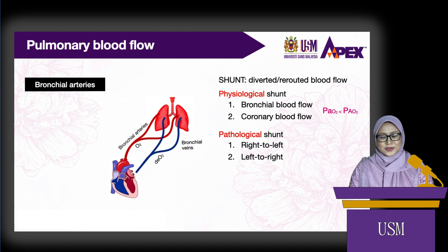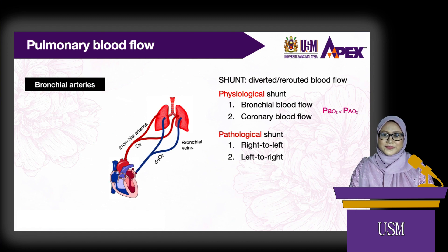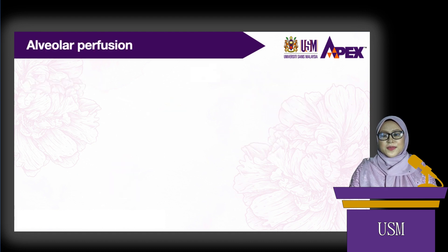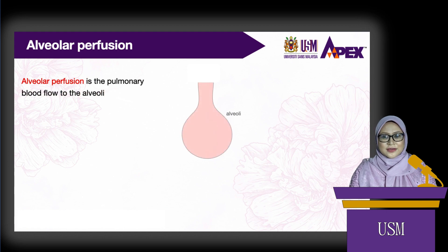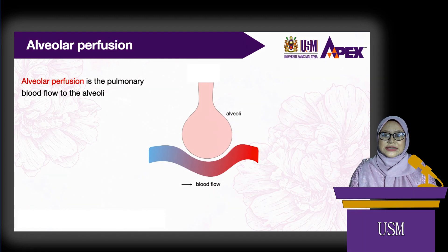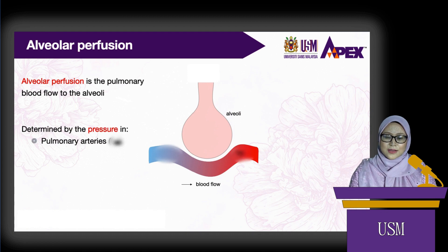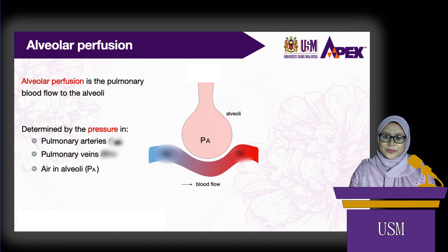So to sum up, the lungs receive two blood supplies from the pulmonary arteries and bronchial arteries. Alveolar perfusion or pulmonary perfusion refers to the pulmonary blood supplying the alveoli and is involved in gas exchange. Alveolar perfusion is determined by the pressure in pulmonary arteries, pulmonary veins, and air in the alveoli. The difference in these pressures will allow the gas exchange process to occur.